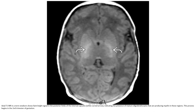This is a T1 image in a term newborn. There is bright signal in the posterior limb of the internal capsule, indicating presence of major oligodendrocytes that are producing myelin in this region. The myelination process begins in the second trimester of gestation.